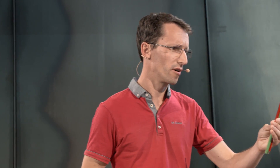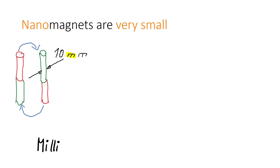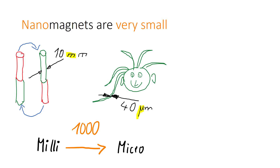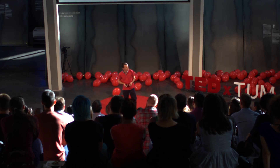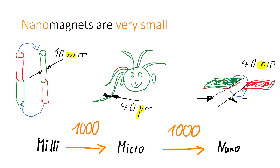Nanomagnets are very small. Those ones are millimeter to centimeter size — too big. Make them 1,000x smaller: that means the thickness of your hair. Still too big — don't put hairs on a chip. Make them 1,000x smaller again and you end up in the nanoworld. That is where we go: 40 nanometers apart, very thin magnets, only a couple of atoms thick.